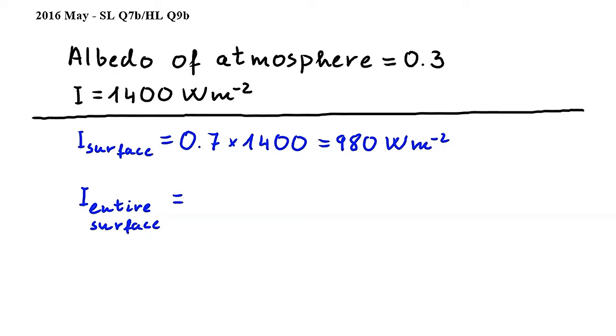The area illuminated by the sun is a circle that has a radius equal to the radius of the earth. The area of this circle can be expressed as πr² where r is the radius of the earth.